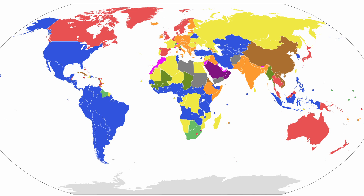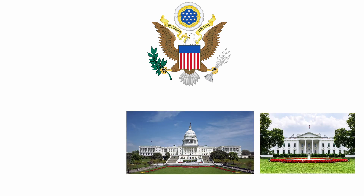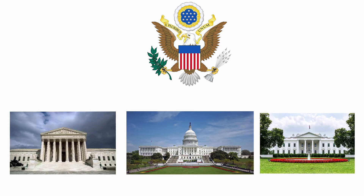Covering all forms of indirect democracy lies far beyond the scope of this video. However, I will cover one of the most well-known examples of representative democracy in the world: the United States government. The United States government is separated into three branches — the executive branch, legislative branch, and the judiciary — all constitutionally limited through a series of checks and balances.